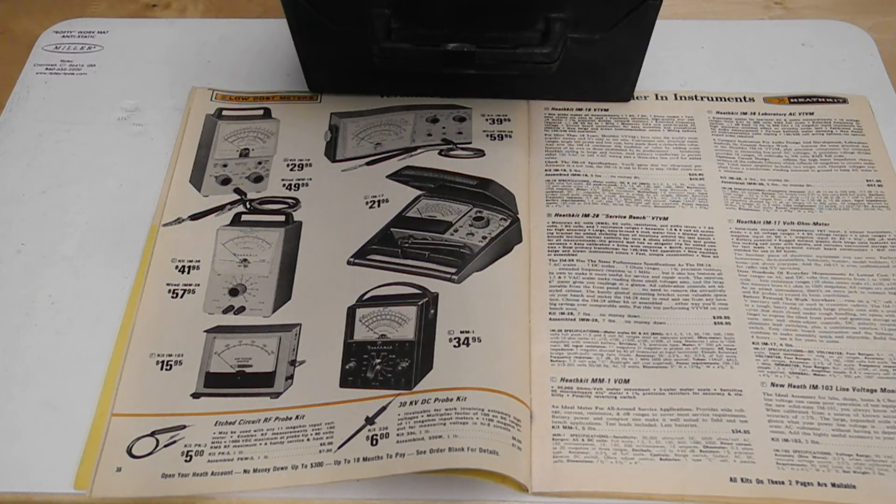The IM17 was discontinued in late 1977 but then came back in 1979 as the IM5217 which was similar in appearance but had some circuit and feature changes.